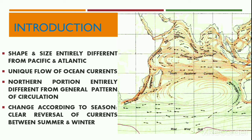They change their direction according to the seasonal rhythm of the monsoon wind. There is a clear reversal of ocean currents in the northern part of the ocean during the summer and the winter season.